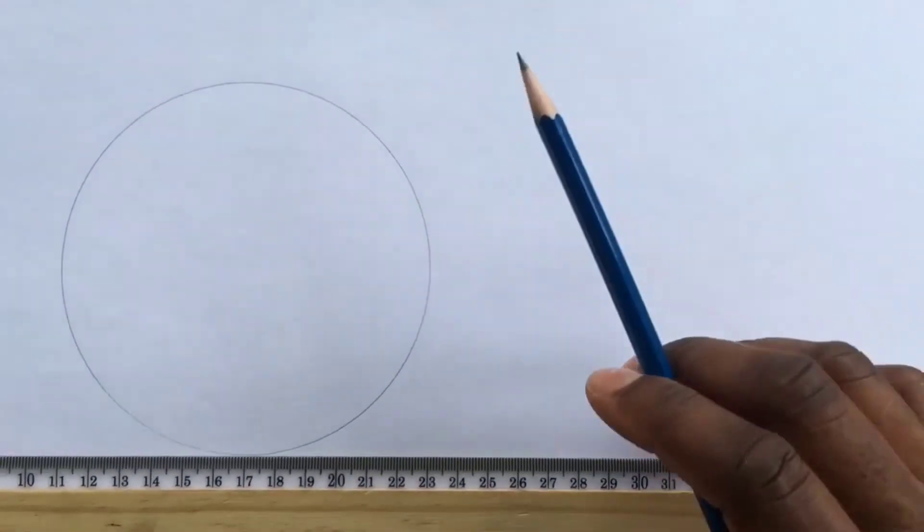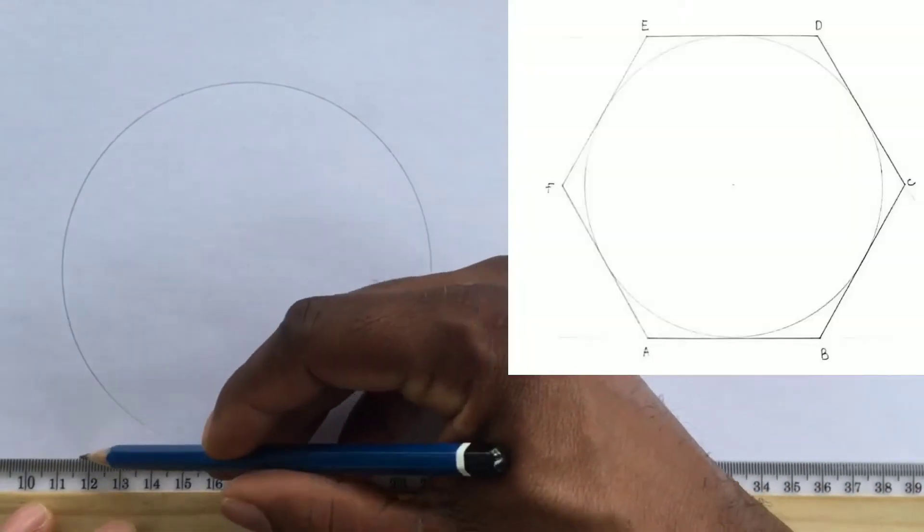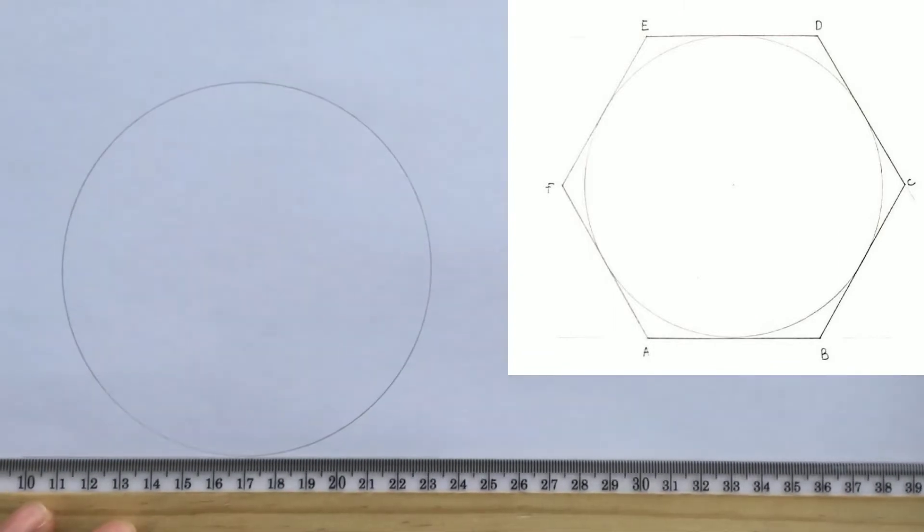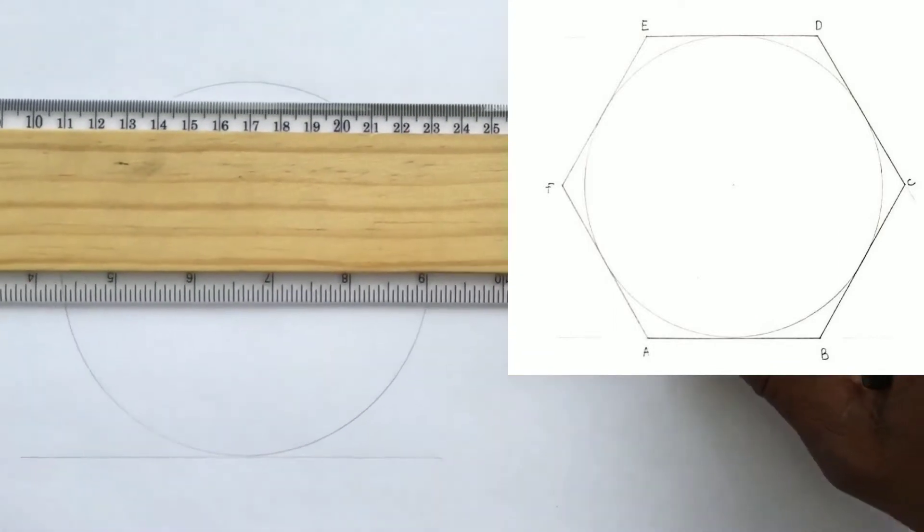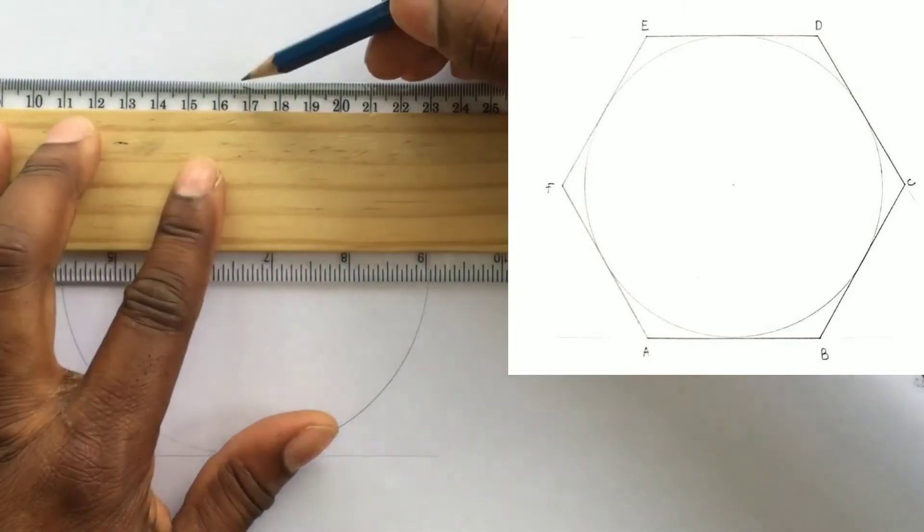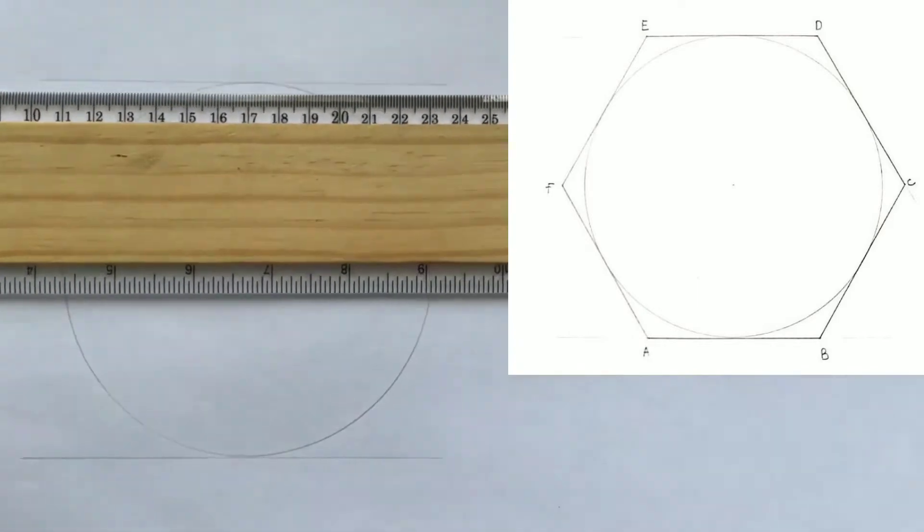We will now draw two horizontal tangents to our circle. The first one will be drawn at the lower part of our circle using our t-square. The second will be drawn at the upper section of the circle using our t-square. Remember to hold your t-square firmly against your table.